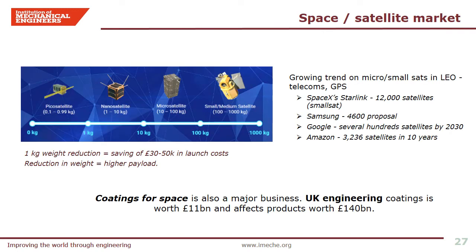This slide shows a growing trend in the satellite market, predominantly micro and small satellites in low Earth orbit, communication, telecom and meteorological satellites, and GPS. SpaceX, Amazon and Google are probably leaders in these areas. In most of these satellites, there will inevitably be use of aluminium as a preferred material for various components. Increasing interest in lightweight aluminium is driven firstly by cost saving and secondly by the ability to increase payload — a reduction of one kilogram for lift-off is estimated to save £30,000 to £50,000 in launch costs. Coating for space is also a major business: UK engineering coatings is worth £11 billion and the FX products worth £140 billion.